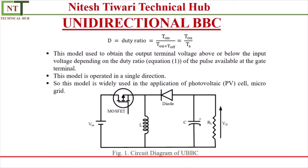What is the meaning of unidirectional buck-boost converter? It means a buck-boost converter in which power flows in only one direction — from the input terminal to the output terminal, as you can see in this figure. In the next video lecture I have discussed the bidirectional buck-boost converter, in which power flows in both directions. So let's continue with the unidirectional buck-boost converter.